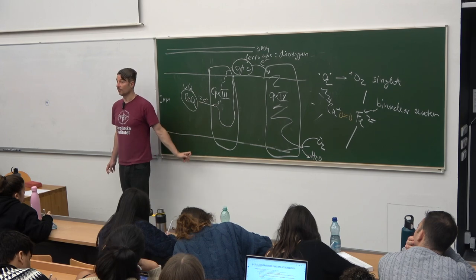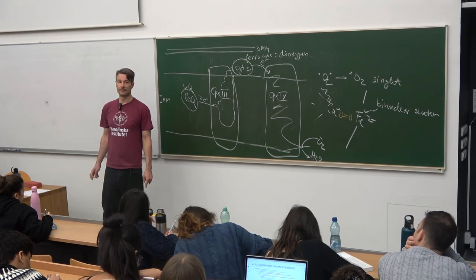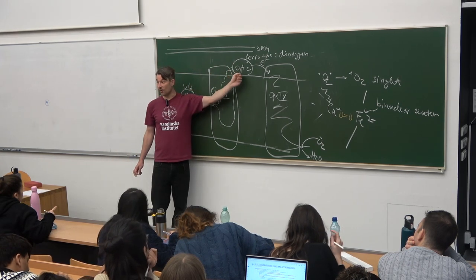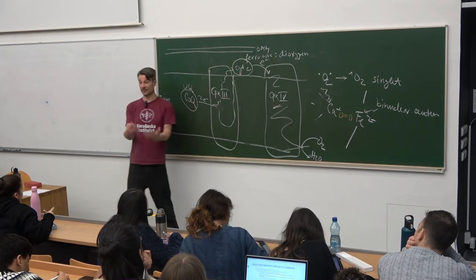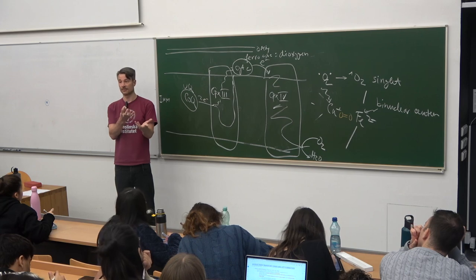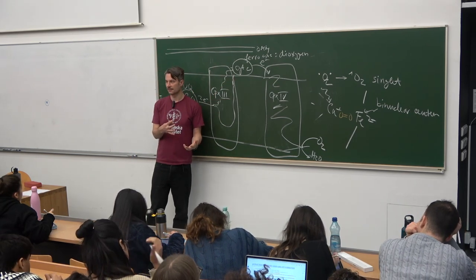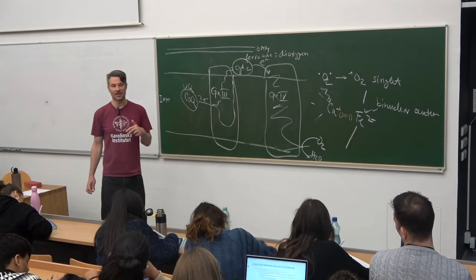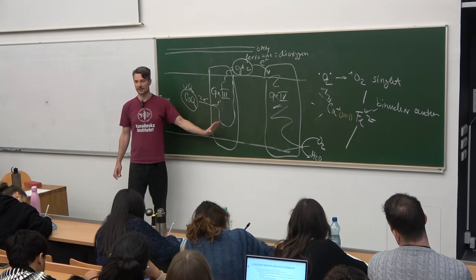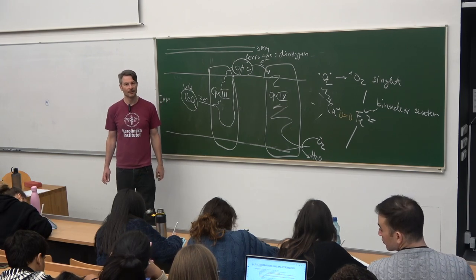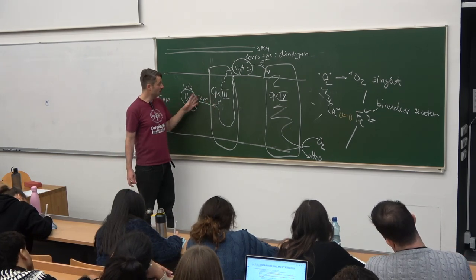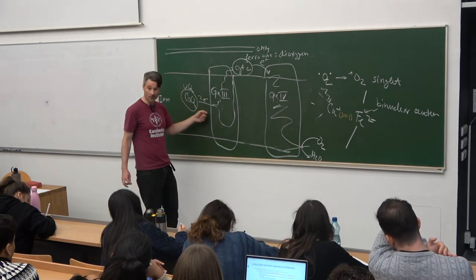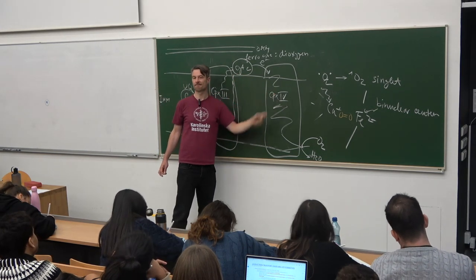The systematic name for Complex III would be ubiquinol : ferricytochrome C oxidoreductase. We usually call it Complex III or cytochrome BC1 — there are many different names. To reduce one molecule of oxygen, Complex III has to act twice and cytochrome C has to act four times. Cytochrome C is located in the intermembrane space — it's attached to the outer surface of the inner mitochondrial membrane by electrostatic interaction, since the protein has a positively charged domain and the phospholipids in the membrane are negatively charged.